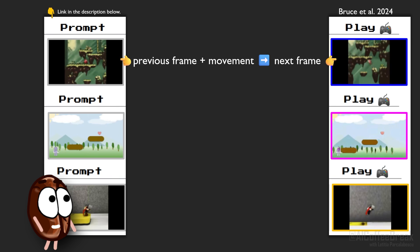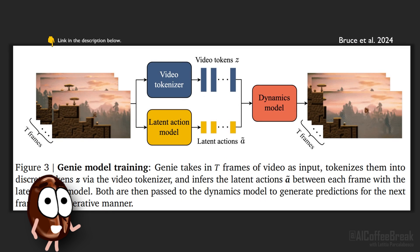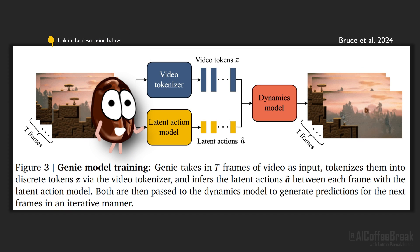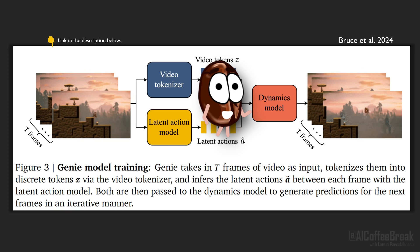Genie has three important components: a video tokenizer that converts raw video frames into discrete tokens, a latent action model that infers what action could have taken place between pairs of frames—so this is a helper module that learns actions unsupervised by just watching YouTube—and third, a dynamics model that predicts the next frame of the video from a latent action and past frame tokens.